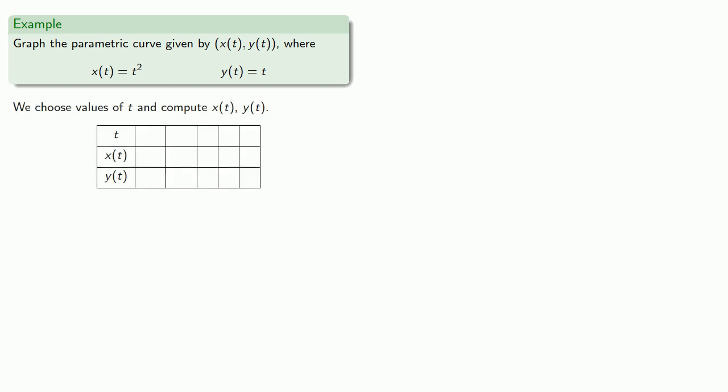We'll choose values of t and compute x(t) and y(t). If t = 0, we get... If t = 1, we get... If t = 2, we get...